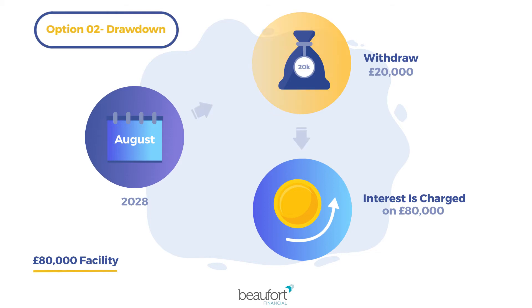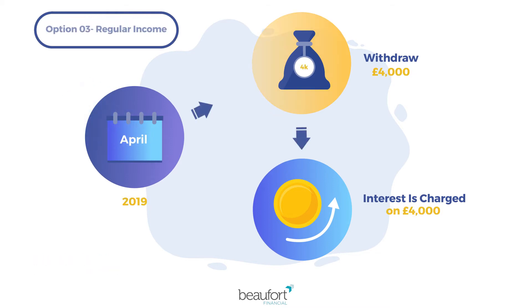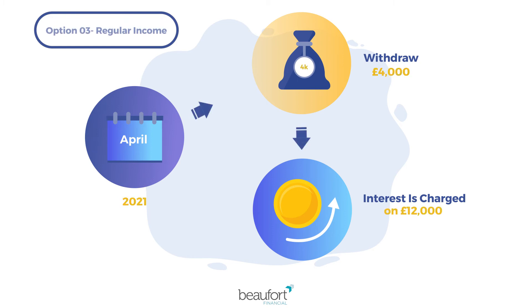The third option is to take your Lifetime Mortgage in the form of a regular income, with interest only being charged on the amounts released.